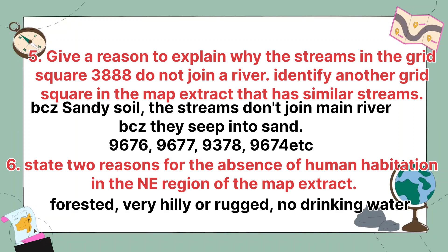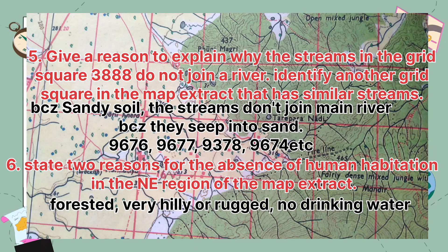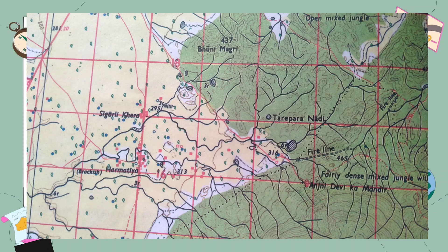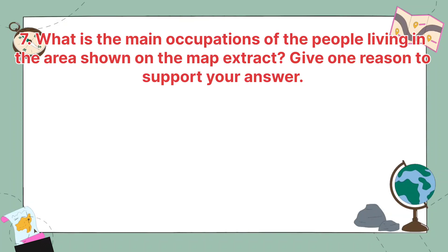State two reasons for the absence of human habitation in the northeast region of the map extract. The reasons are: forested area or hilly region or rugged topography, and no drinking water available.